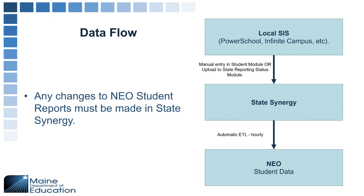All data needs to flow through from your local system into State Synergy in order to fuel the NEO reports. If you have any changes that need to be made on a NEO report, those changes need to happen in State Synergy in order to be reflected on those reports. This includes multiple uploads including the enrollment upload, personal data, economic status, and special education — you'll need to have your data in as thoroughly as possible.